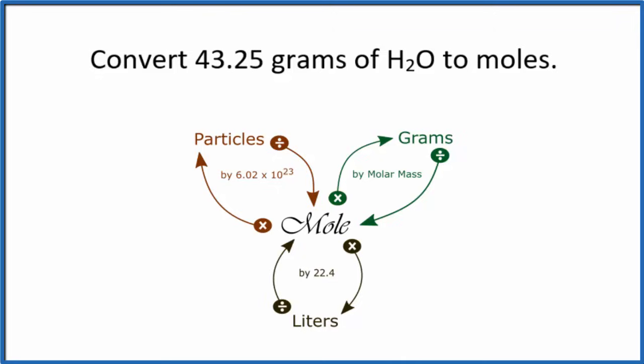For this problem let's first use the mole map here to help visualize how we can solve it. We're given grams of H2O and we want to get to moles so we're looking for moles of H2O. Grams to moles we'll just divide by the molar mass. We find the molar mass by going to the periodic table and adding the molar mass up for each element. We have two hydrogens and one oxygen.